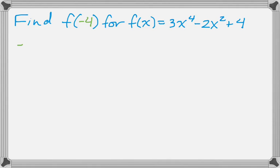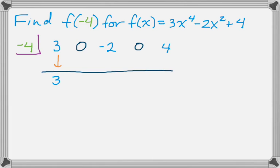So I'm going to take the -4 and put it in the box. And now I have a 3 that goes with x⁴, I have a 0 that goes with x³, a -2 that goes with x², a 0 that goes with x, and a 4 that goes with x⁰. I'll draw that line. Now I drop down the 3. Multiply -4 and 3 to get -12. Add down.